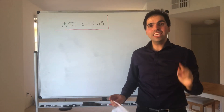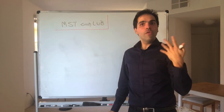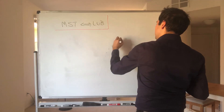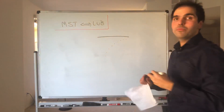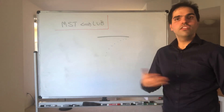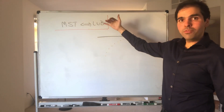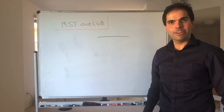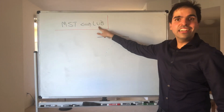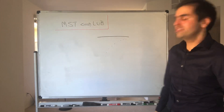Thanks for watching. Today I want to prove an absolutely amazing result. In a previous video, we proved the monotone sequence theorem, which says that if a sequence is increasing and bounded above, then it must converge. Implicitly in that proof we used the least upper bound property, since we defined the supremum of the sequence to be the limit. So the least upper bound property implies the monotone sequence theorem. But what we'll show today is that in fact they are equivalent.